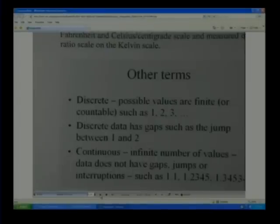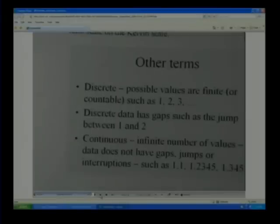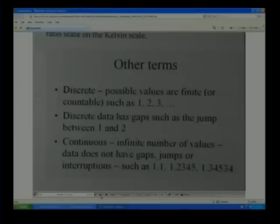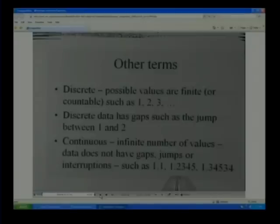So the other type of data besides discrete is continuous. And in continuous, there is an infinite number of values. You can have, you know, a 1.1, 1.2345, 1.345.